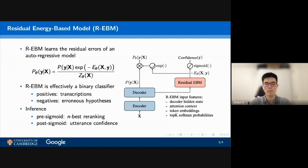From another perspective, R-EBM is effectively a binary classifier or a discriminator between ground-truth transcriptions and erroneous hypotheses from the ASR model.